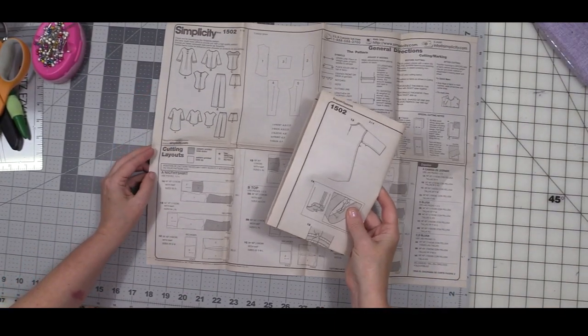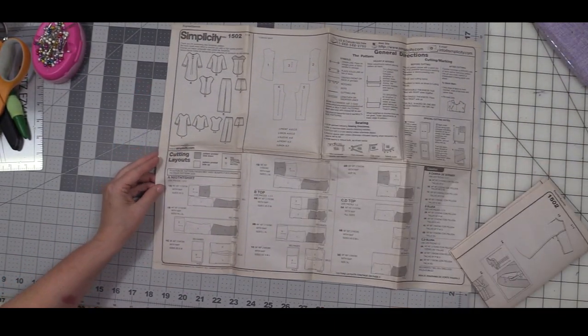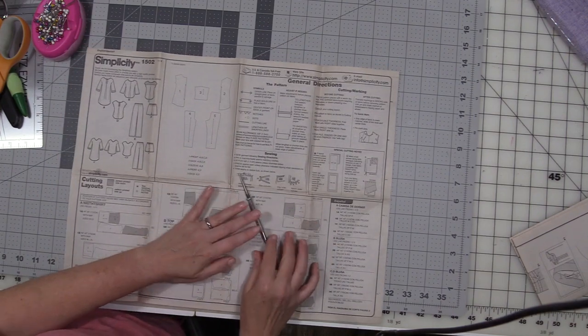And then our other sheet has three of four and four of four. Next section is the general directions, these are the terms and the symbols that you're going to see on the pattern pieces.